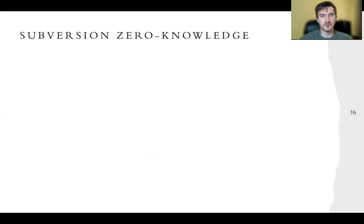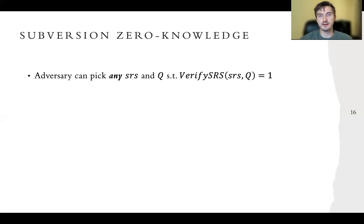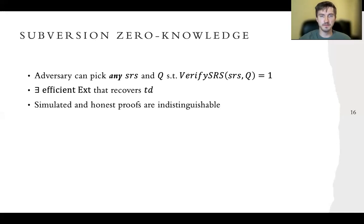Then we borrow the notion of subversion zero-knowledge, which was invented by Bellare, Hoang, Palacio, and Scafuro. The idea is that the adversary is allowed to pick any SRS and a set of update proofs such that they verify, and in that case there must exist an efficient extractor that can extract a trapdoor from the SRS. This trapdoor can be used to simulate proofs that are indistinguishable from honest proofs. So this is our security model.